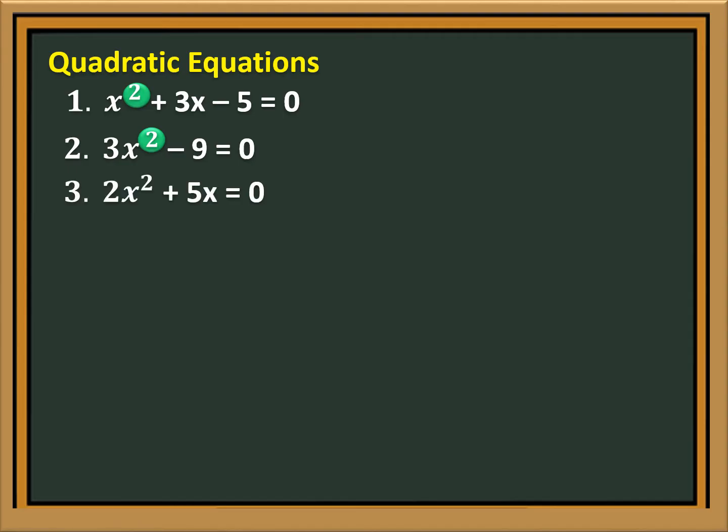Number 3: 2x squared plus 5x is equal to 0. The highest exponent of x is 2. Therefore, the equation is quadratic.